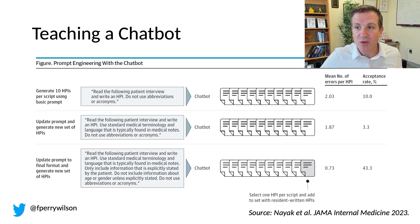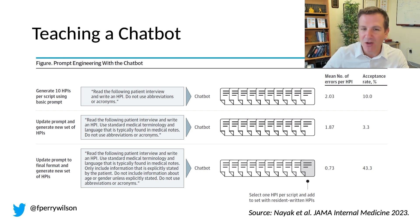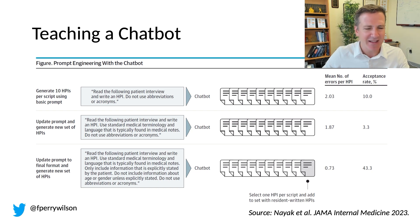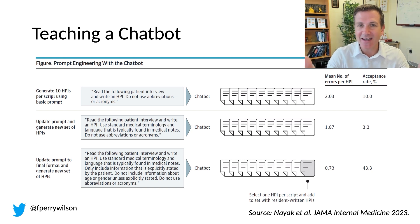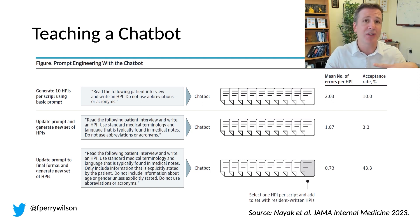What they found — this number represents the mean number of errors per HPI. They had to refine the prompt: reminding GPT to use standard medical terminology and language typically found in medical notes still yielded a fair number of errors. Until they said 'only include information that is explicitly stated by the patient. Do not include information about age or gender unless explicitly stated. Do not use abbreviations or acronyms.' Now with this very specific prompt, they had it generate about 10 HPIs and then picked one that was particularly good. So this is highly selected — this isn't just throwing stuff into the chatbot and getting an HPI out.